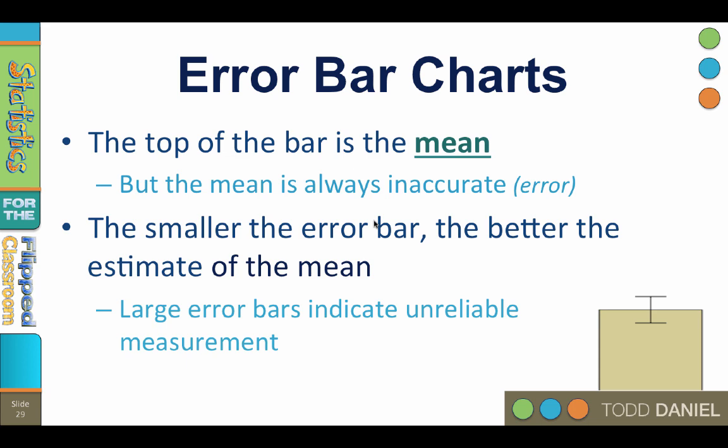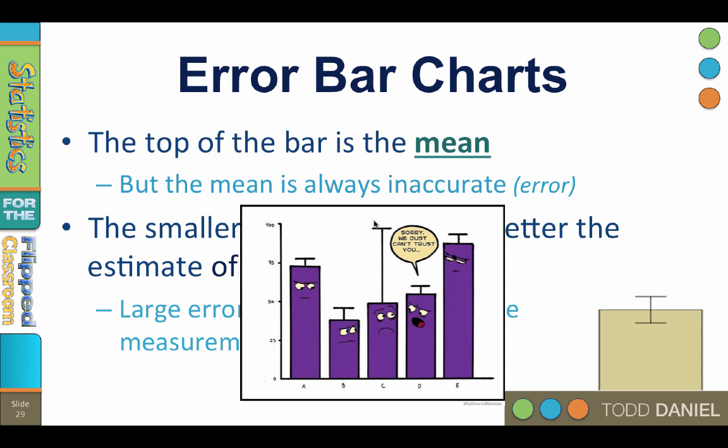Large error bars indicate unreliable measurements. In this cartoon, the value with the large error bar is being told, sorry, we just can't trust you, because his mean estimate is so unreliable.